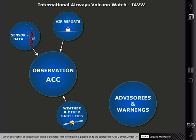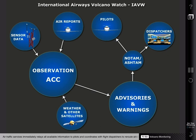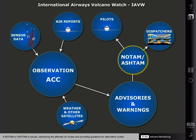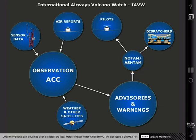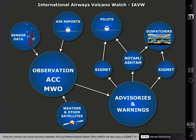When an eruption or volcanic ash cloud is detected, that information is passed on to the appropriate area control center, or ACC. Air traffic services immediately relays all available information to pilots and coordinates with flight dispatchers to reroute aircraft. A NOTAM or ASHTAM is issued, identifying the affected air routes and providing guidance for alternative routes. Once the volcanic ash cloud has been detected, the local Meteorological Watch Office, or MWO, will also issue a SIGMET for volcanic ash in the area.